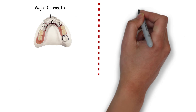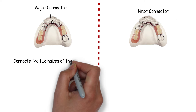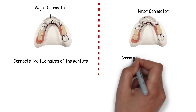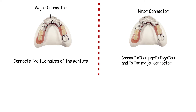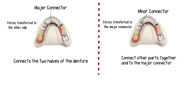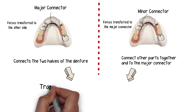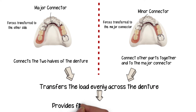To summarize the difference: the major connector connects the right and left halves of the denture, while the minor connector connects other parts of the prosthesis to the major connector. If a load is applied on one side of the denture, it will be transferred to the major connector through various minor connectors, and then to the other side through the major connector — distributing the load throughout the entire prosthesis and increasing stability. This is the core principle of major and minor connectors.